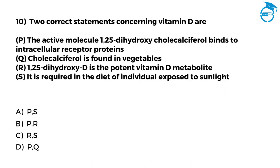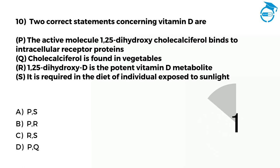Here is the last one. Two correct statements concerning vitamin D are: P, the active molecule 1,25-dihydroxycholecalciferol binds to intracellular receptor proteins. Q, cholecalciferol is found in vegetables. R, 1,25-dihydroxy-D is the potent vitamin D metabolite. S, it is required in the diet of individuals exposed to sunlight. Options: A: P, S. B: P, R. C: R, S. D: P, Q. The right option is C, that is R, S.